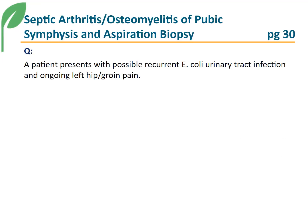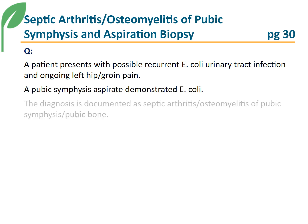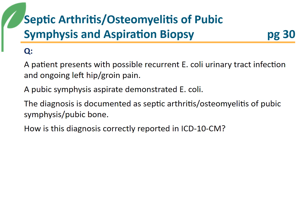A patient presents with possible recurrent E. coli urinary tract infection and ongoing left hip and groin pain. A pubic symphysis aspirate demonstrated E. coli. The diagnosis is documented as septic arthritis, osteomyelitis, of the pubic symphysis and pubic bone. Coding Clinic is asked how this diagnosis is correctly reported in ICD-10-CM.